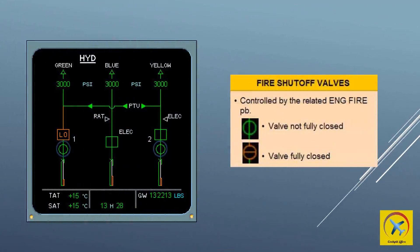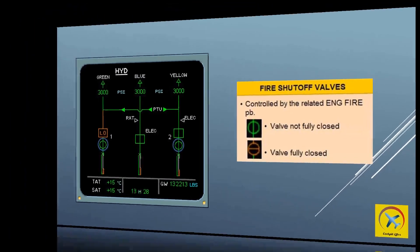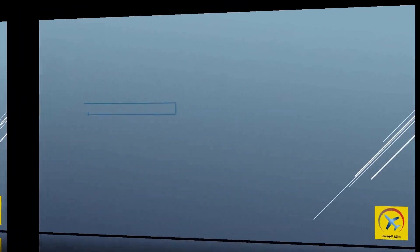The electrical pump indication shows green with amber when the pump is on and an overheating condition occurs. Fire valve indication displays green when the fire valve is open and amber when the fire valve is closed. It is controlled by the related engine fire push buttons on the overhead panel.